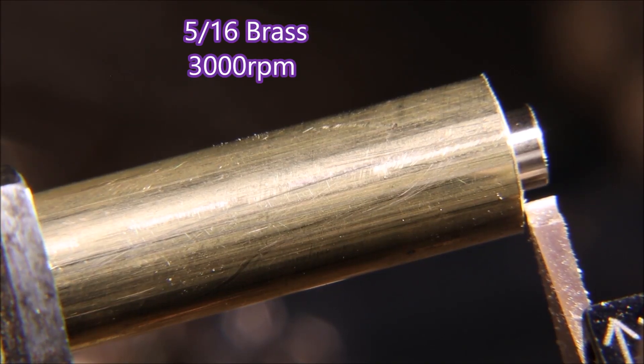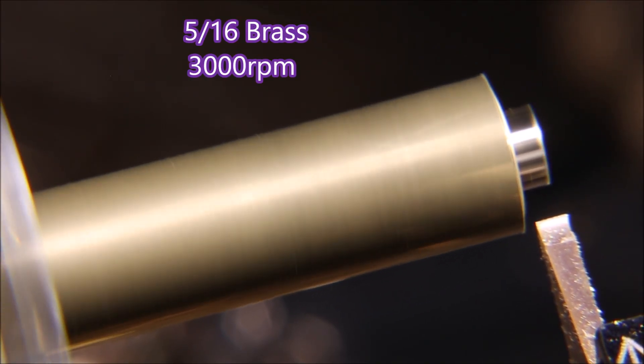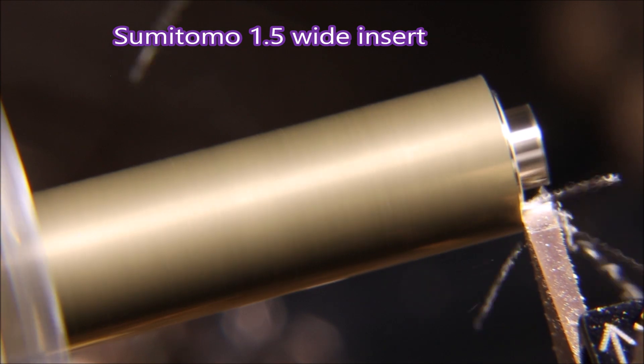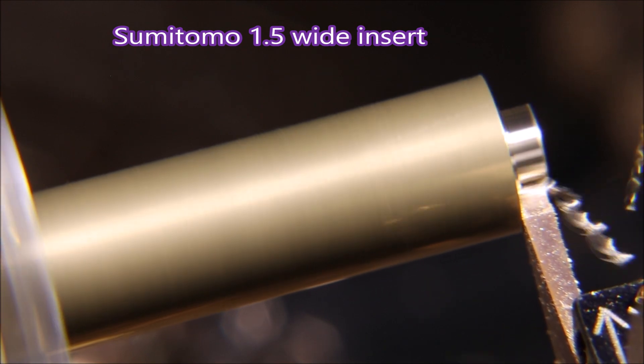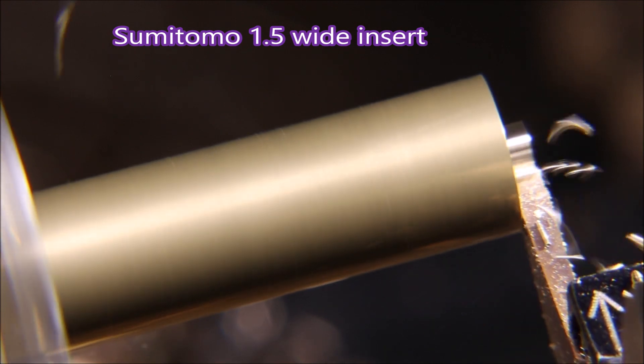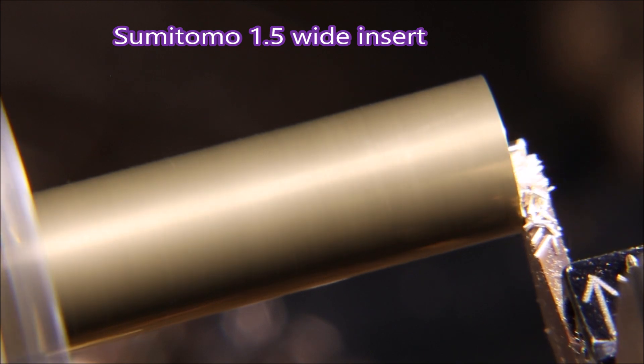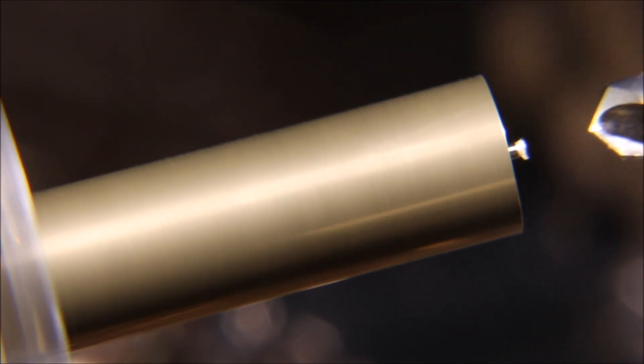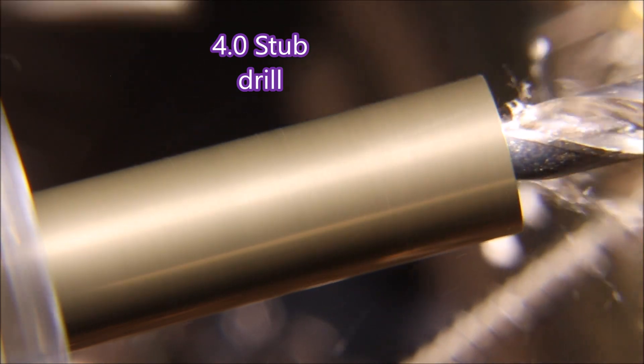G'day folks, in this video we're making a small brass fitting. This is actually 8mm or 5/16 diameter stock. That's a Sumitomo 1.5mm wide parting insert; it leaves a nib, but the drill doesn't seem to be bothered by it much.